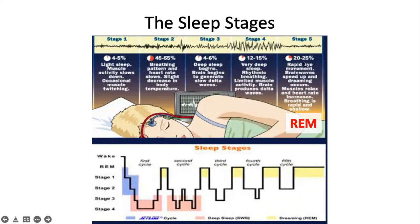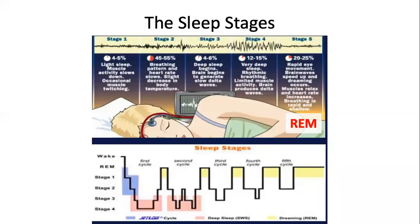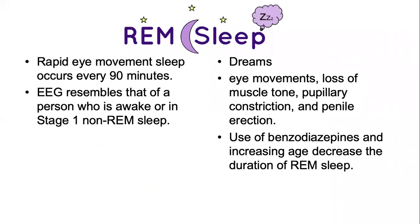In stage five, or REM sleep, you have rapid eye movement — that's why it's called REM. If you observe another person sleeping and see their eyes flickering under their eyelids, they are in the REM stage. The brain waves speed up, and this is the time when dreaming occurs. Contrary to stages three and four, your heart rate increases and breathing may be rapid and shallow.